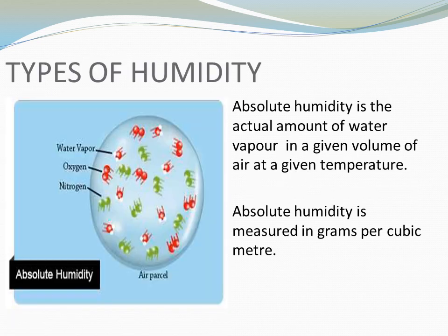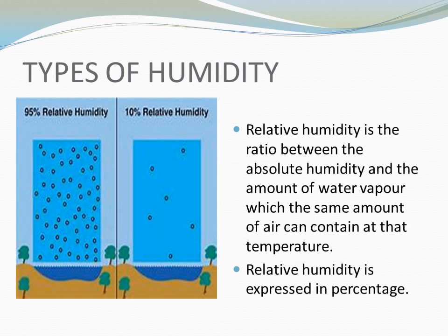Types of humidity. The first type is absolute humidity. Absolute humidity is the actual amount of water vapor in a given volume of air at a given temperature. Absolute humidity is measured in grams per cubic meter.